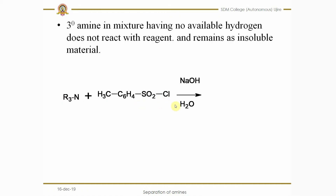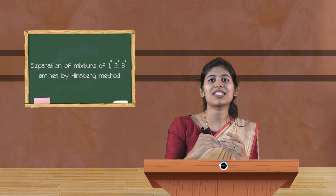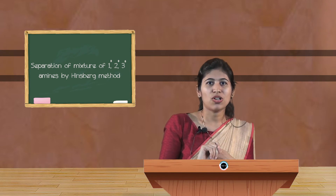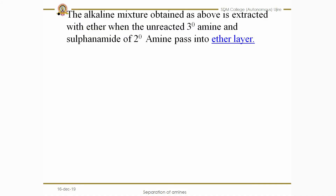For the tertiary amine, which has the formula R3N, there is no free available hydrogen. As a result, neither the Hinsberg reagent nor sodium hydroxide will react with it — there is no reaction. It remains as an insoluble material in the alkaline media. So among the three, the tertiary and secondary amines remain as insoluble products, while the primary amine is soluble in water.